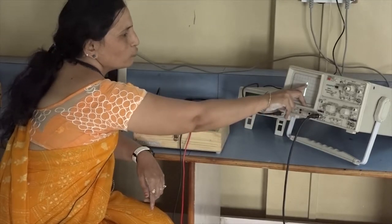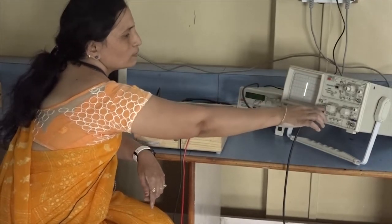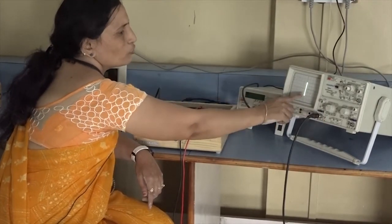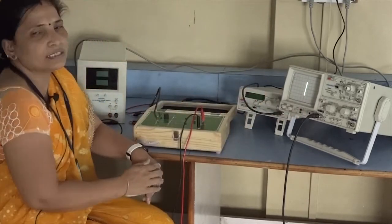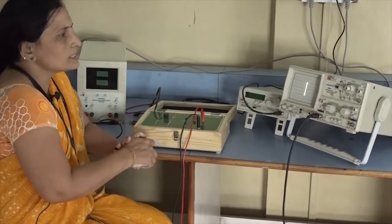We are adjusting here. It is 1, 2, 3 and 4 and the volts per division now is adjusted at 1. So 4 into 1, 4 volts is the amplitude of your signal.